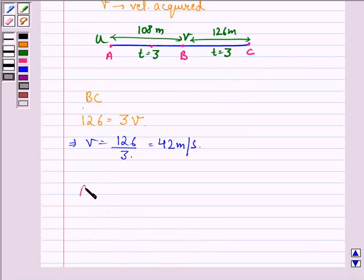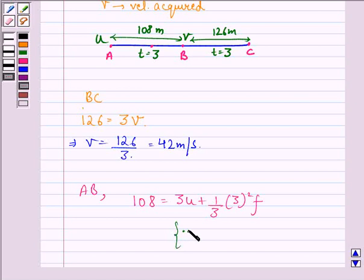Now for AB, 108 equals 3u plus half of 3 squared into f, because s equals ut plus half ft squared, where t is the time and s is the distance.